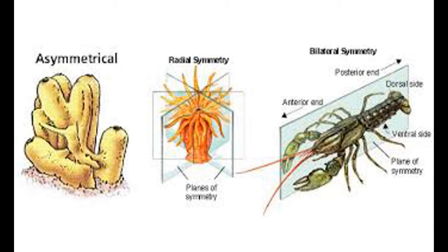Radial symmetry enables sea creatures like jellyfish and starfish to experience the environment equally from all directions. Animals with bilateral symmetry have a head and tail, front and back, and right and left sides. The evolution of bilateral symmetry promotes the development of a central nervous system at the animal's front end and allows for streamlined and directional motion.